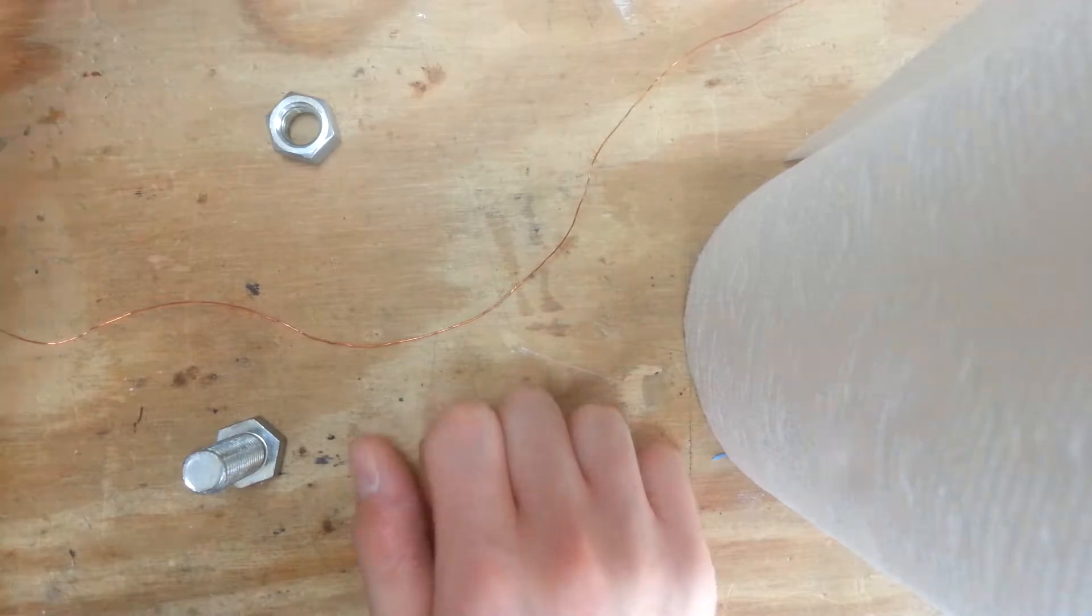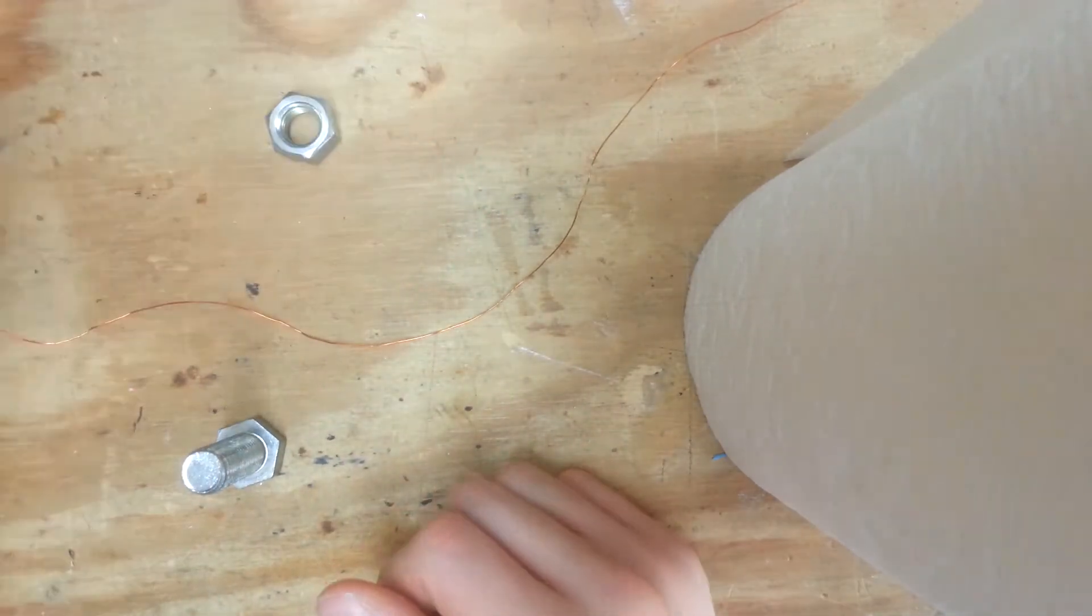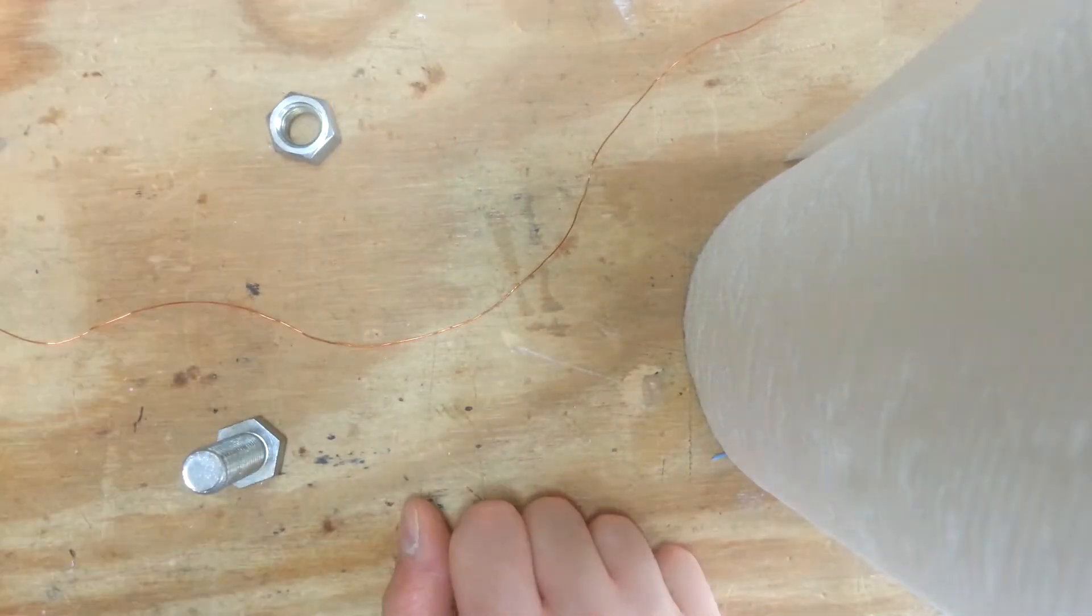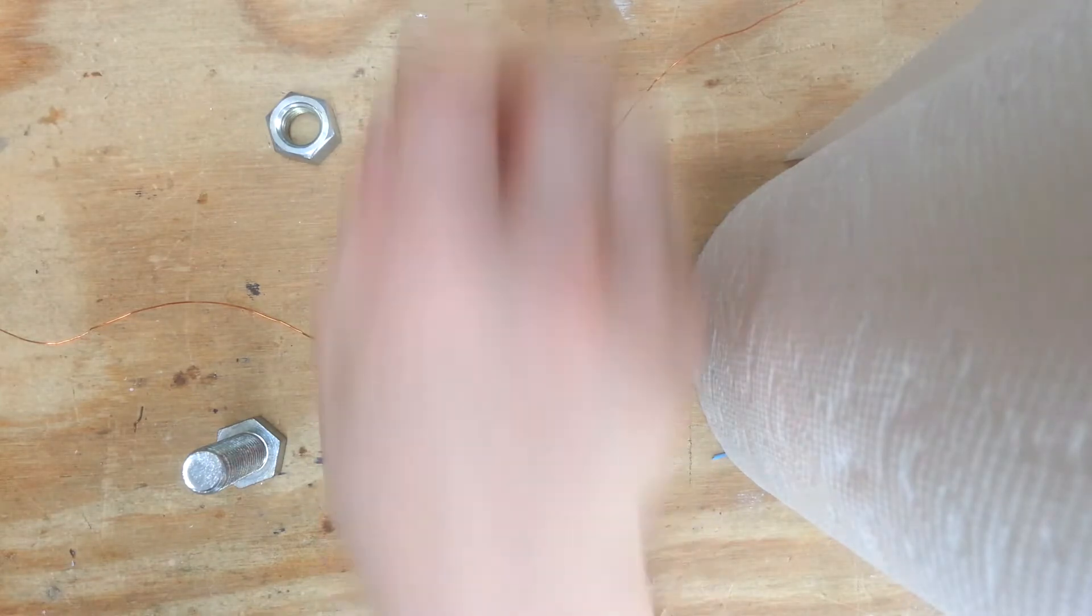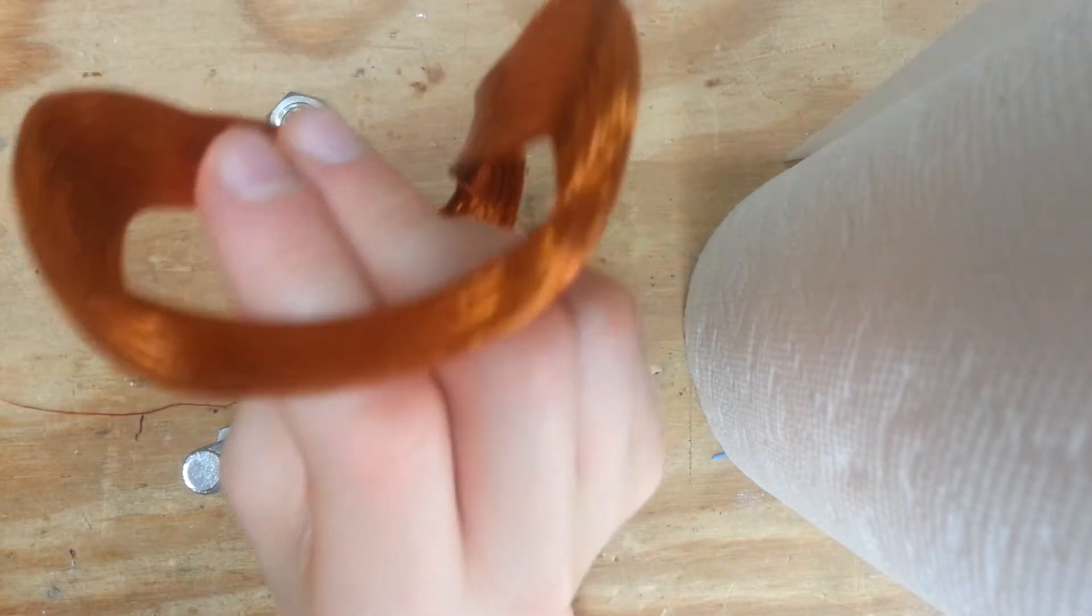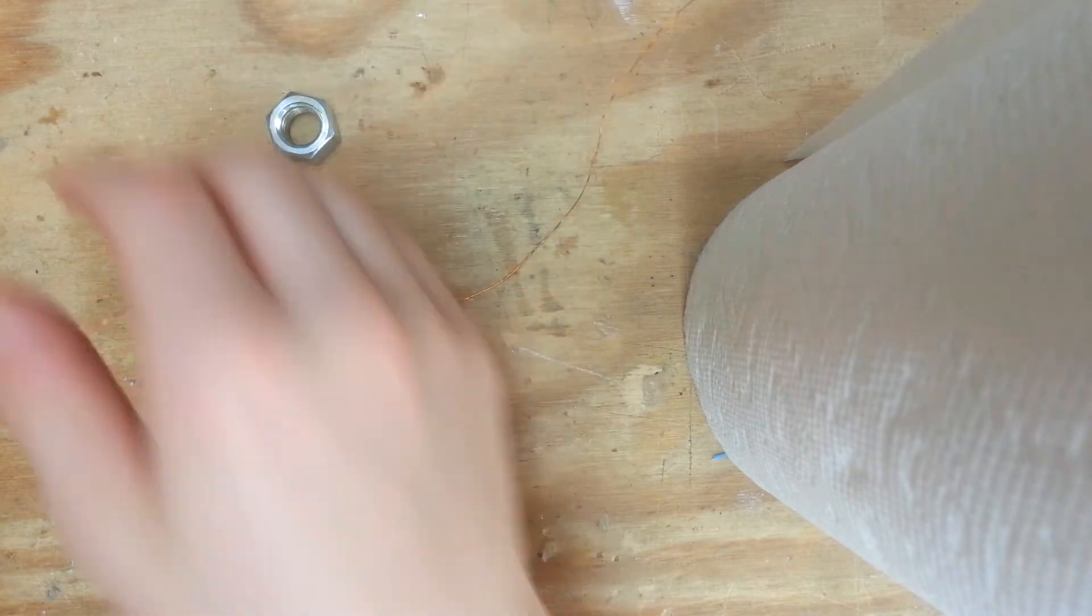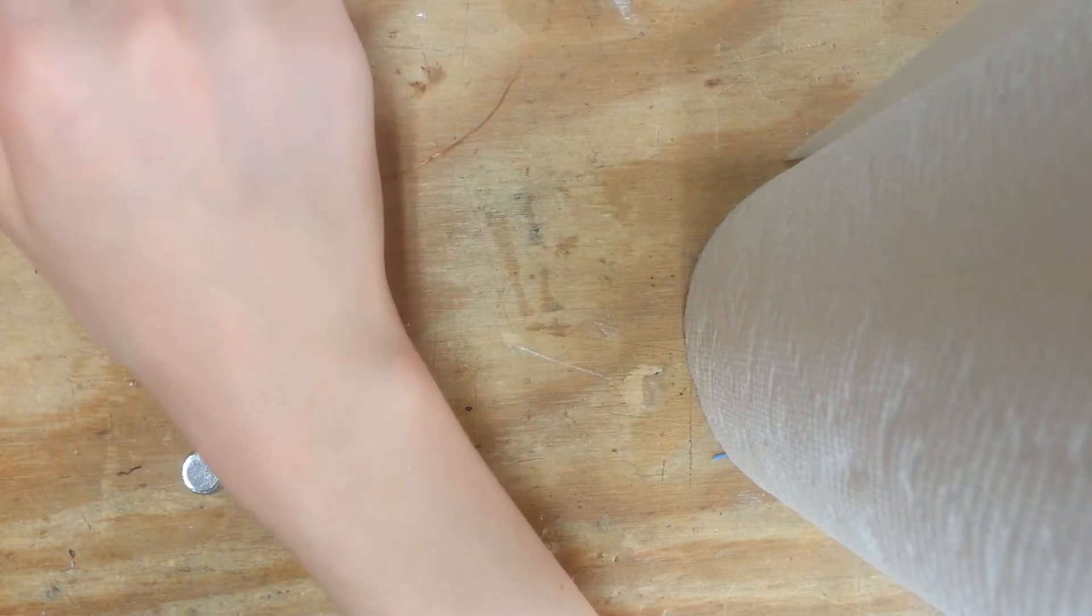Now over here, we have just a bunch of this stuff left over from, I believe we got this out of two TVs. There's about four of these in each. And now I already have a good few feet unwound.